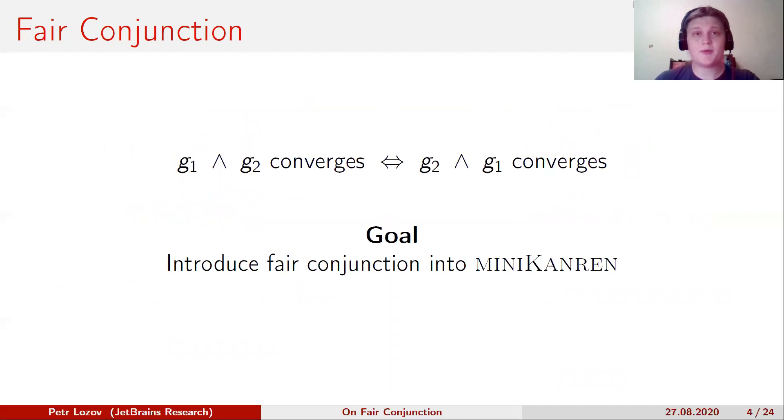We want the conjunction to depend as little as possible on the order of conjuncts. First of all, we want the order of conjuncts not to affect the convergence. This property is called fairness.